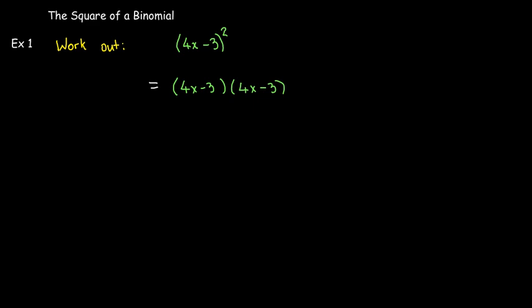Which means I take the product, 4x minus 3, times 4x minus 3. So I would use FOIL. And that's exactly what we're going to do here. Use the extended distributive property, or FOIL. And we'll get four terms. But then we're going to look for a pattern to help us remember how to do this.